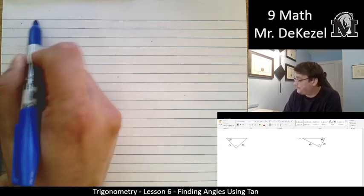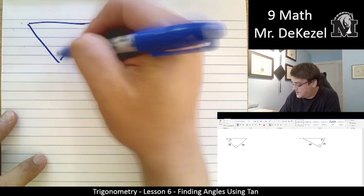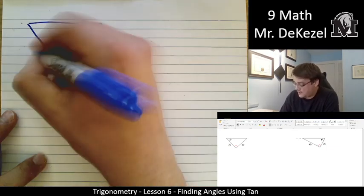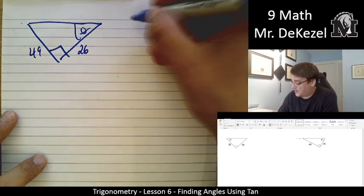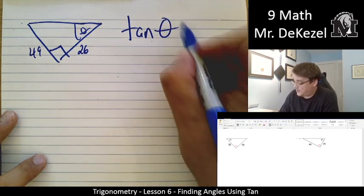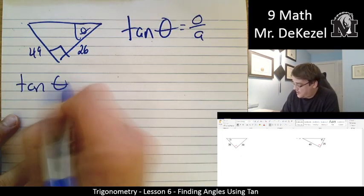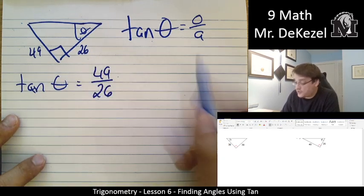Let's do another one. This is the right angle down here. Our angle of interest is on the right. 49 and 26. All right, we're going to do the tan of theta is equal to opposite over adjacent. Tan of theta. It's our unknown. It's equal to 49 divided by 26.